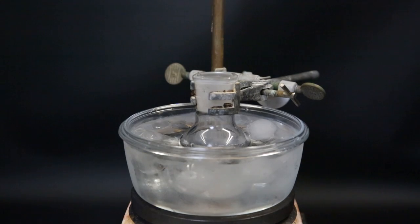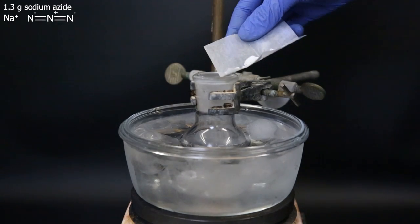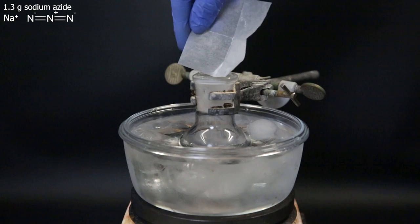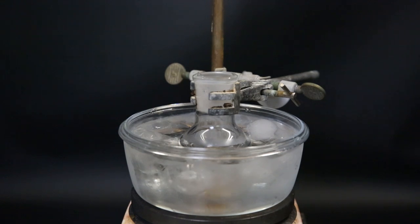I let it stir for a bit and then I add 1.3g of sodium azide. Now that everything has been added, I leave it to stir for 4 hours and allow it to come back to room temperature.